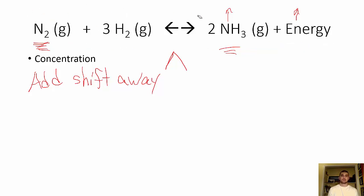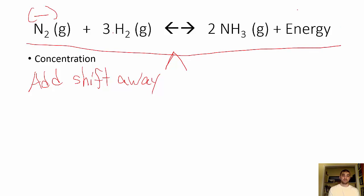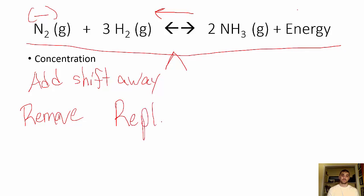What would happen if I were to remove stuff? Let's say I were to remove N2 — subtract some. Think of it like a balance: if I'm removing stuff from the left side, I'm going to have to replace it. This side became too light; I need to make more stuff on that side in order to stay balanced. So if we remove, we've got to replace. If I remove N2, I'd have to replace it by shifting to the left, which means I'm going to increase my H2, and I'm decreasing the amount of NH3 and decreasing the amount of energy.